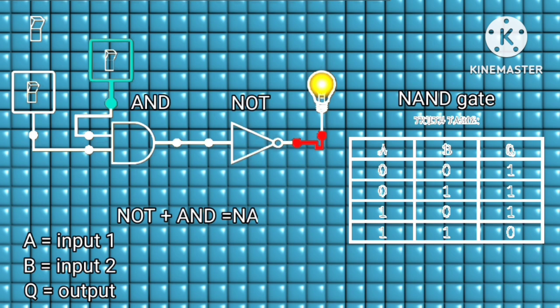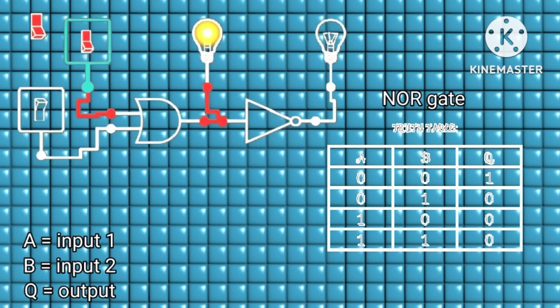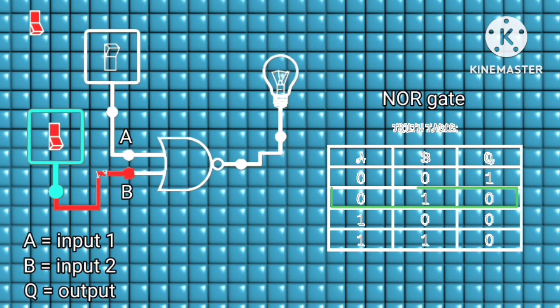The same also happens for the NOR gate. It is the combination of the OR gate and the NOT gate. So the NOR output is only high if both inputs are low, but low if any input goes high.